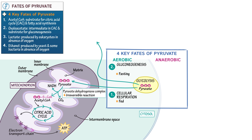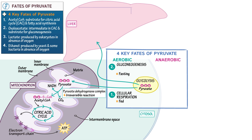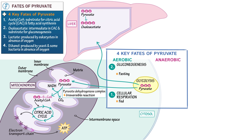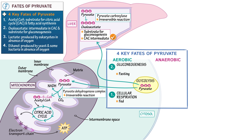Next, let's show gluconeogenesis, in which the key fate of pyruvate is oxaloacetate. Draw a liver, which stores glucose in the body. Draw a section of the mitochondrion — the inner membrane and the matrix. Show that pyruvate again enters the mitochondrial matrix, where it's converted to oxaloacetate. Indicate that this is an irreversible reaction catalyzed by pyruvate carboxylase. Write that oxaloacetate is a substrate for gluconeogenesis and also an intermediate of the citric acid cycle, indicating that this pathway also replenishes citric acid cycle intermediates.